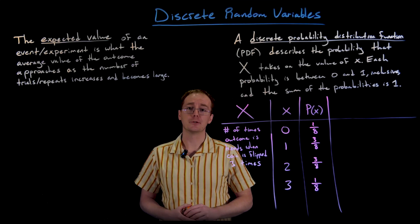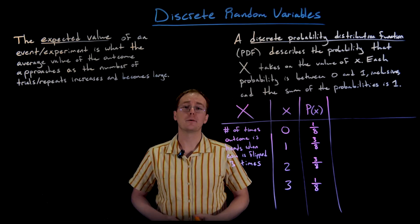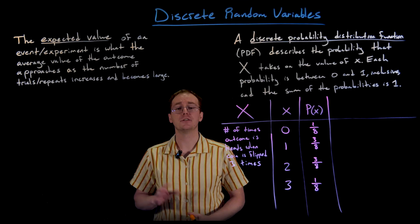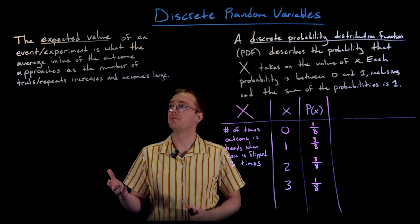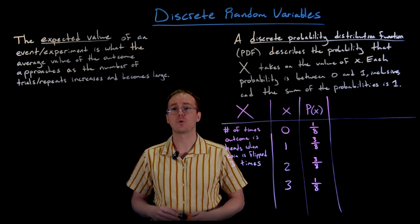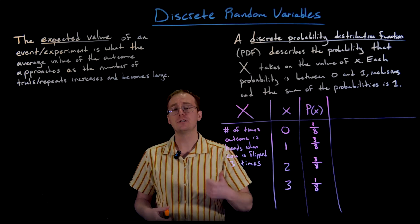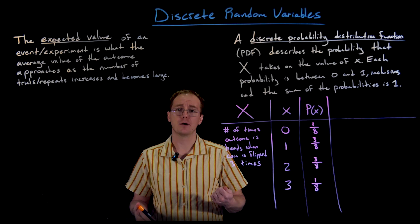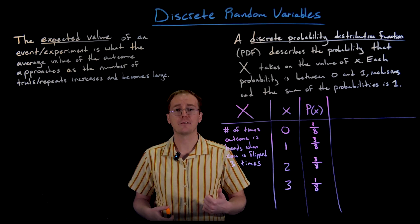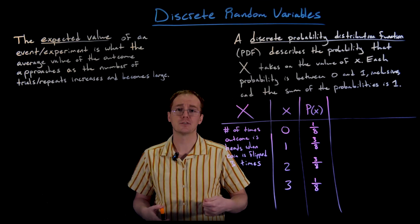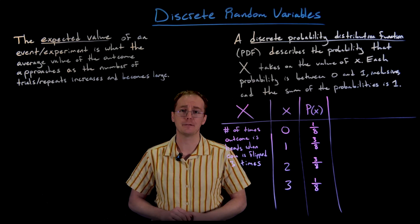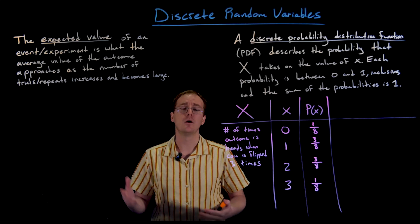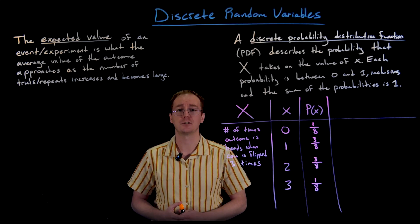Now that we have a probability distribution function, we can compute the expected value. The expected value of an experiment is what the average value of the outcome approaches as the number of trials becomes large. If we keep repeating our three coin flips hundreds or thousands of times and find the average number of heads throughout all those trials, that average is the expected value.